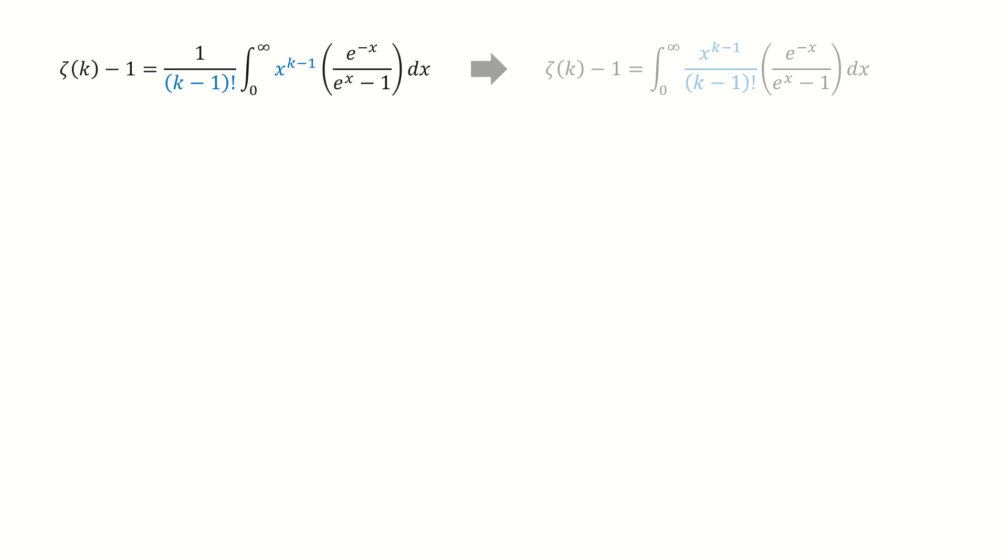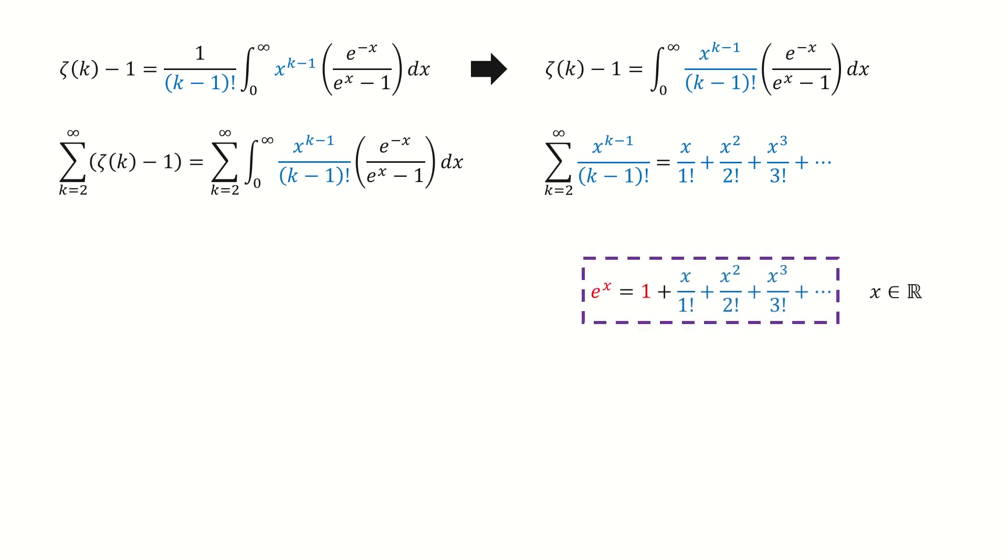I copy them here. And then we put this factorial term inside the integral. Next, we take the sum on both sides. Note for this series, we write the first three terms to help you better visualize. Recall the Maclaurin series for the exponential function. This series is uniformly convergent for arbitrary x belongs to real numbers. So if we compare them, we can find the above series just equals to e to the power x minus 1. As I mentioned just now, because this series is uniformly convergent for arbitrary x belongs to real numbers, we can switch the order for the integration and the summation.